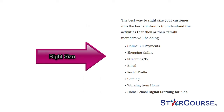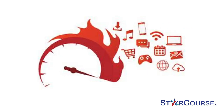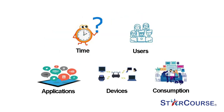The best way to right-size your customer into the best solution is to understand the activities that they or their family members will be doing. The speed formula is calculated by having a consultative conversation utilizing open-ended questions that gather information regarding time, users, applications, devices and consumption. Here are example questions for each component: Time — How important is it to do things quickly without waiting? Users — Tell me more about how household members will be using the Internet. Applications — How often do you stream content via Netflix or other services? Devices — What type of Internet-enabled devices are being used in your home? Consumption — How often do these activities occur at the same time?